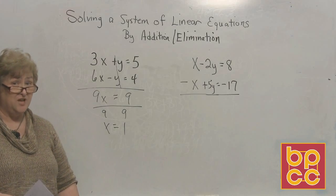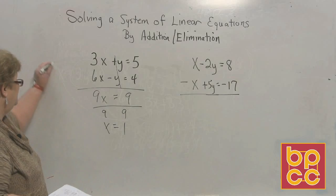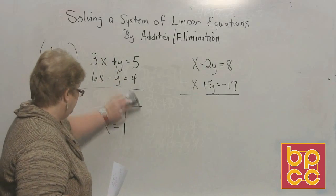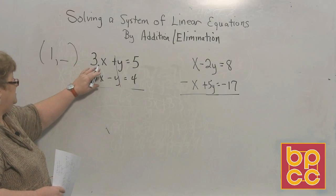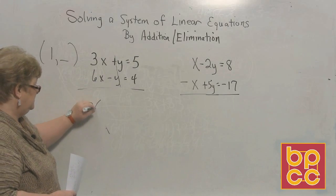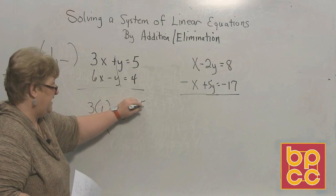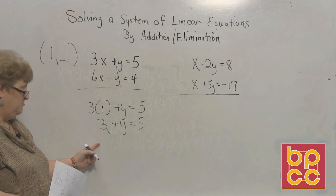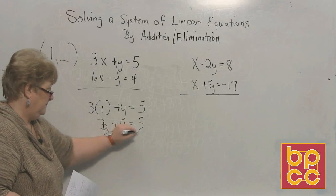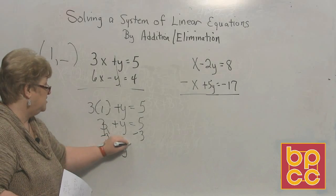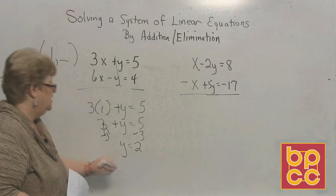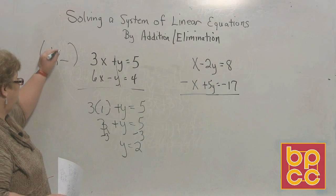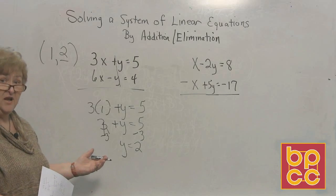Now, when we get one variable, all we do is substitute that value into either of the equations. So if x is 1, I'm going to find y. I'll pick the top equation: 3 times 1 plus y equals 5, so 3 plus y equals 5. Moving the 3 to the other side, y equals 5 minus 3, which is positive 2. So these two equations have one ordered pair in common — they intersect at (1, 2). The answer is (1, 2).